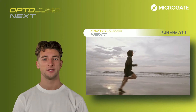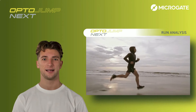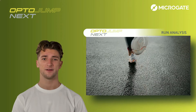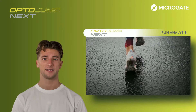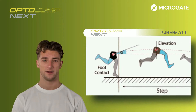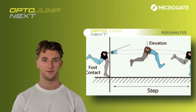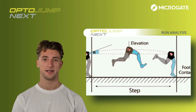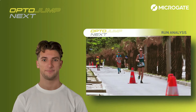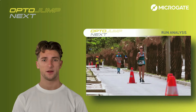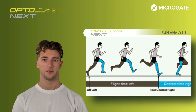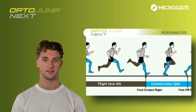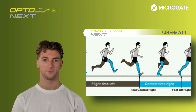Human locomotion is defined as the art of controlled falling. It can in fact be described as the displacement of the body's center of mass forward and its subsequent catching with the supporting leg. We speak of running when there is a period when neither foot touches the ground, called double flight.